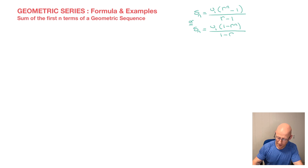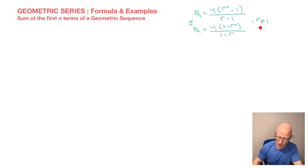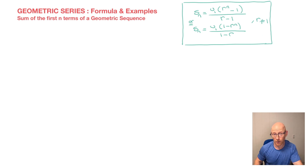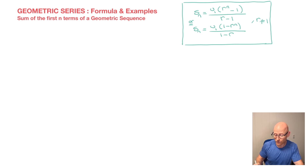These formulas will only work provided the common ratio isn't equal to 1. If the common ratio were equal to 1, the denominators would equal 0, which simply isn't mathematically possible. If you're an IB mathematics student, you'll see this formula in your formula booklet. But whether or not you have a formula booklet, when studying geometric sequences, this formula really is something you should know.